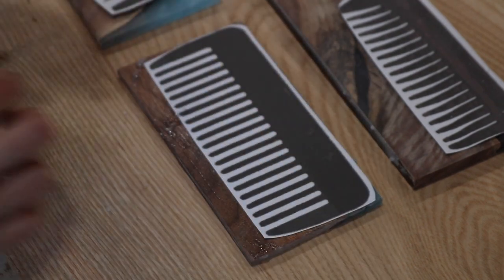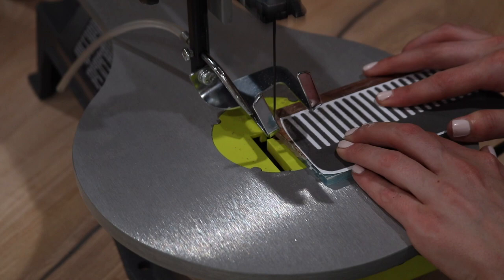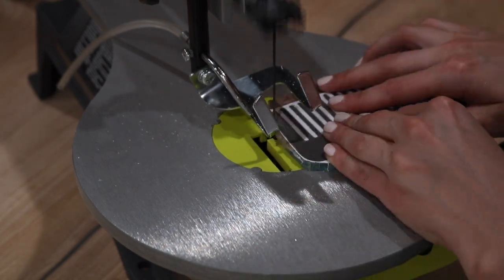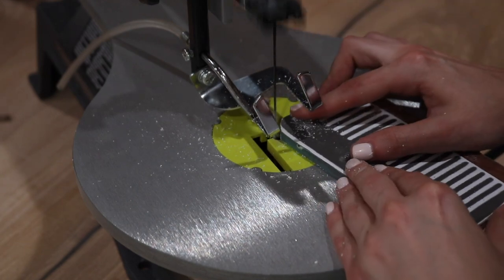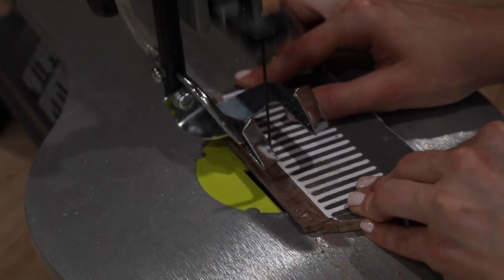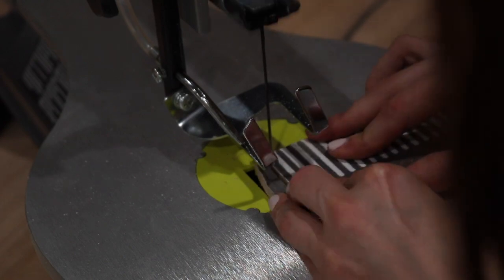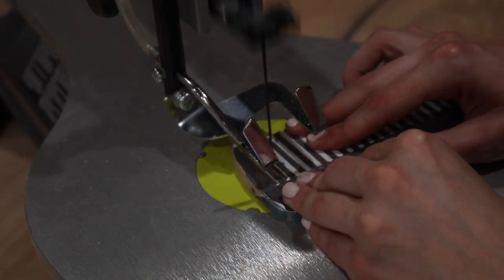After allowing the stencil to dry, I brought them over to my scroll saw and began to cut out the designs. If you don't have a scroll saw, a bandsaw works here as well. I did want to try the jigsaw, but I was afraid that it might be too aggressive and break the piece, so I didn't try that. But if you have success with a jigsaw, I'd love to know, so please let me know in the comments.